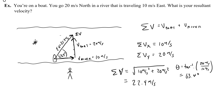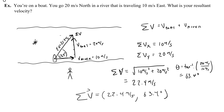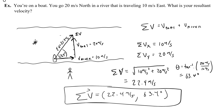If I wanted to write that a little neater, I would say the sum of these velocities will give me 22.4 meters a second at 63.4 degrees. And we have found the resultant velocity, both the magnitude and the direction. Let's do one more problem.